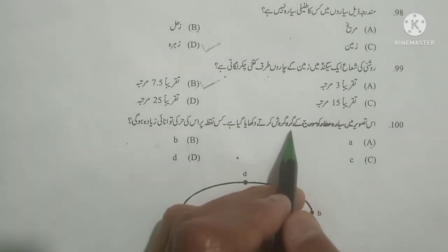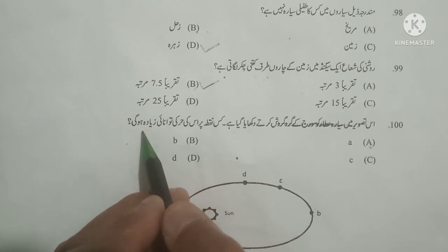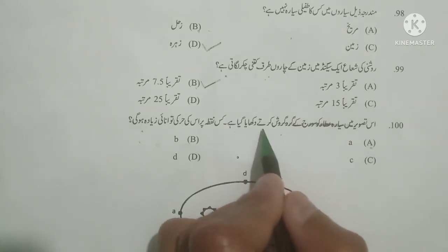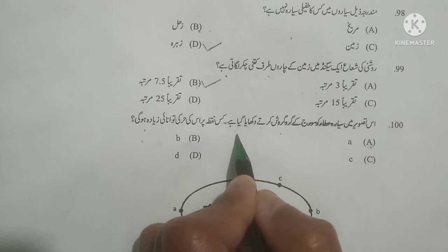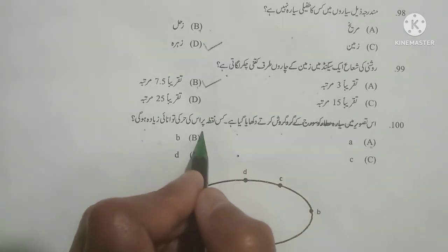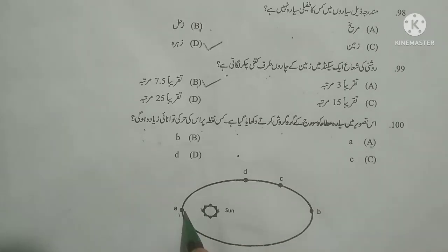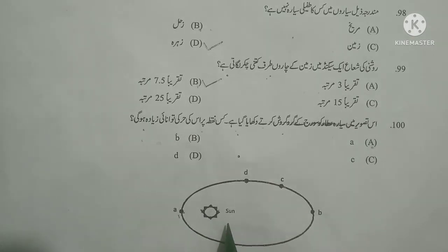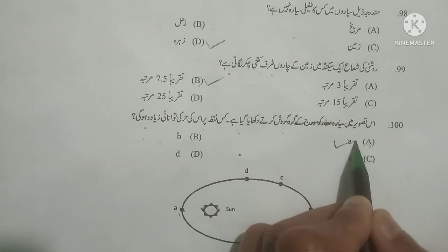Next question: Is tasweer mein sayara atarat ko suraj ke girdh gardish karte dikhaya gaya hai — kis nuqte per iski harki tawanai zyada hogi? The planet Mercury is revolving in an elliptical orbit around the sun as shown in the figure. At which point will kinetic energy be greatest? Point A is nearer to the sun — at point A the angular speed is maximum, so kinetic energy is maximum. Option A is correct.